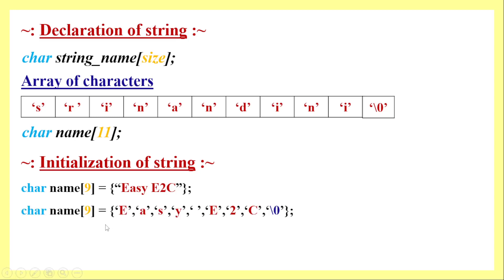That is one way to initialize a string. Another way uses the same string value but initializes it character by character. Each character is enclosed within single quotes, including the space between the two words — that space is also considered a character. The null character is also enclosed in single quotes, and all characters are placed within curly braces, terminated by a semicolon.